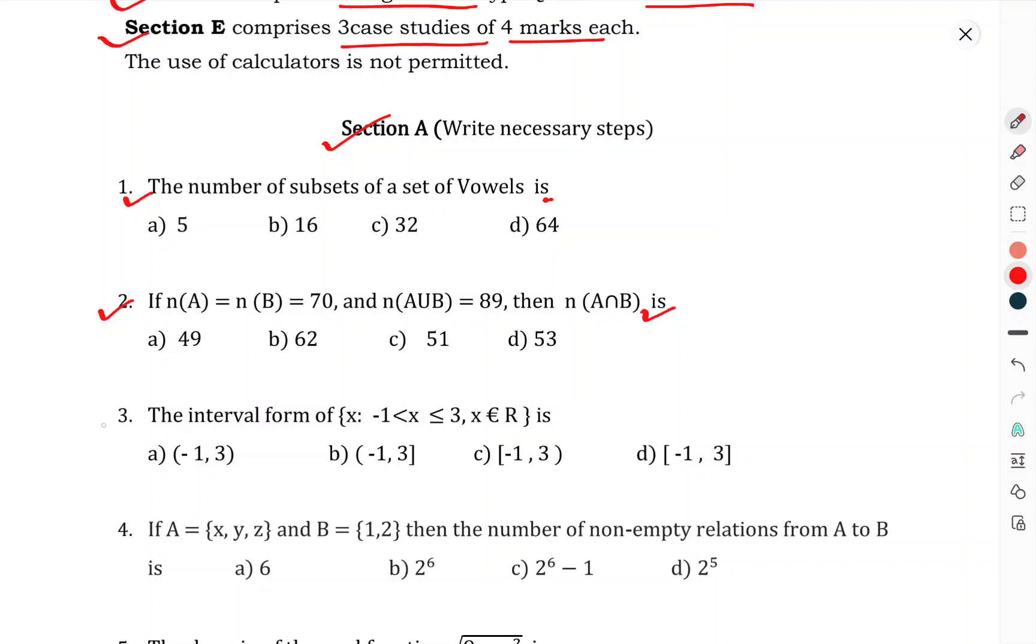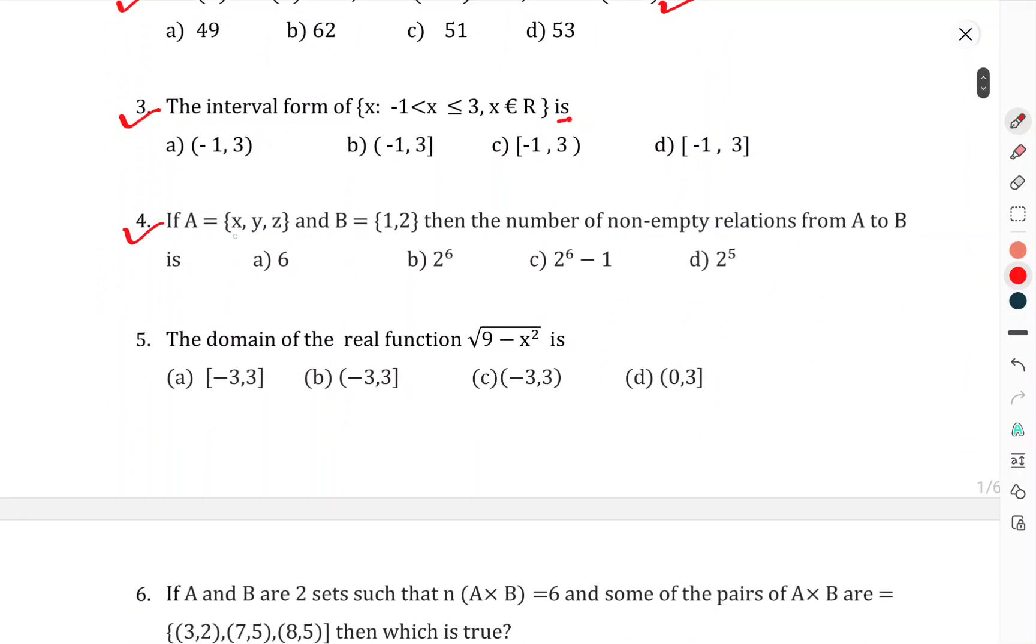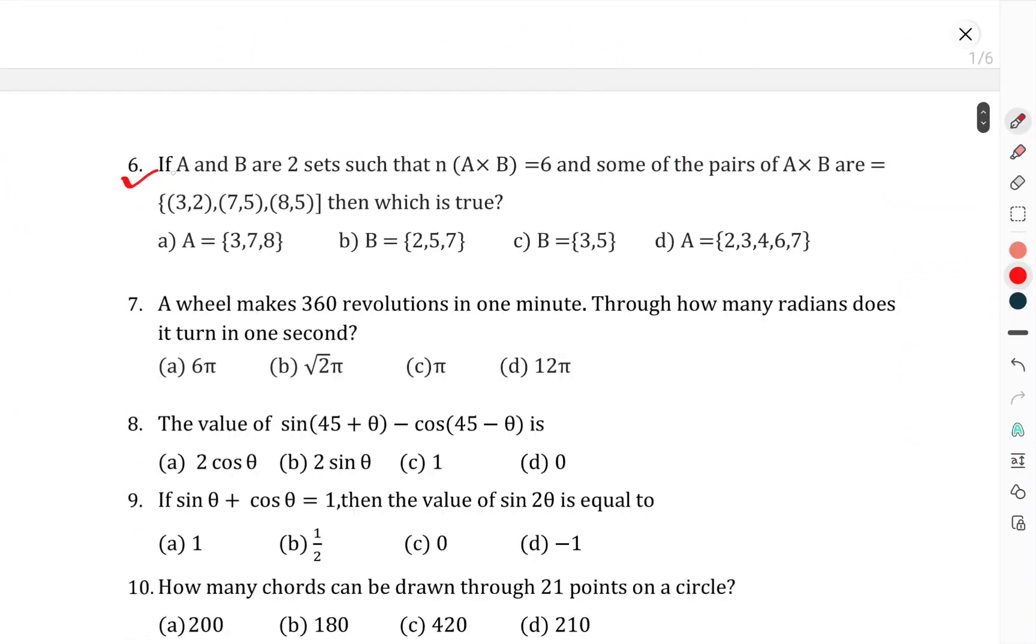Question number 3: The interval form of x less than minus 1, or x is greater than minus 1 but less than 3, where x belongs to real numbers. You have to find the interval. Question 4: If A equals {x, y, z} and B equals {1, 2}, then the number of non-empty relations from A to B is. Question 5: The domain of the real function root of 9 minus x square is. Question 6: If A and B are such that n(A × B) equals 6, and some pairs of A cross B are given, then which is true?